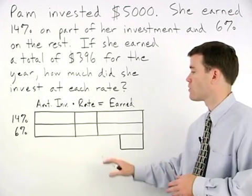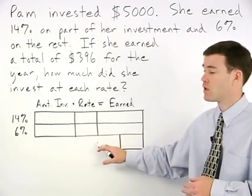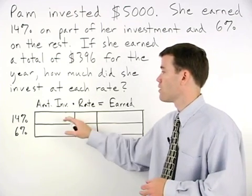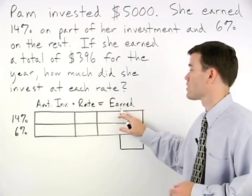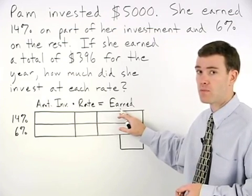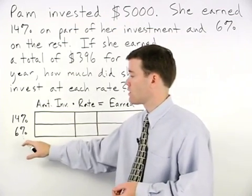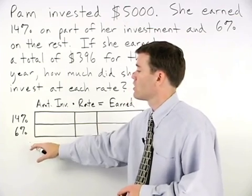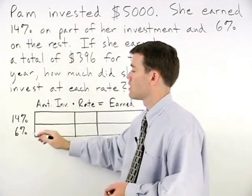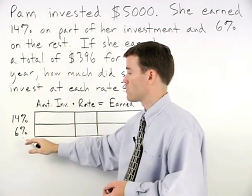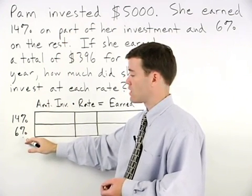I would start this problem by setting up a chart based on our formula: amount invested times rate of interest equals interest earned. Down the left side of the chart, we have the two different types of investments that Pam makes, the 14% investment and the 6% investment.